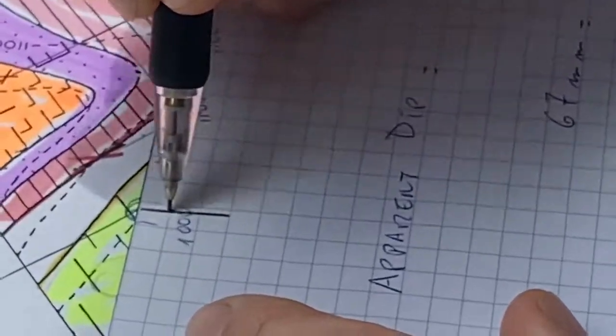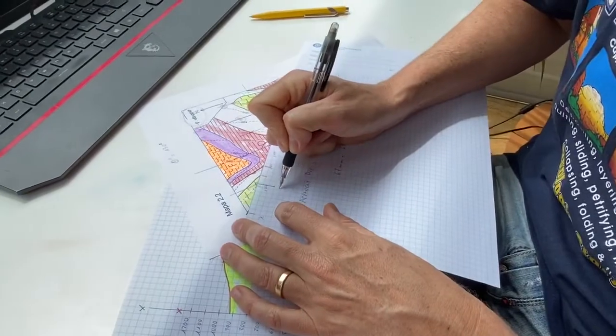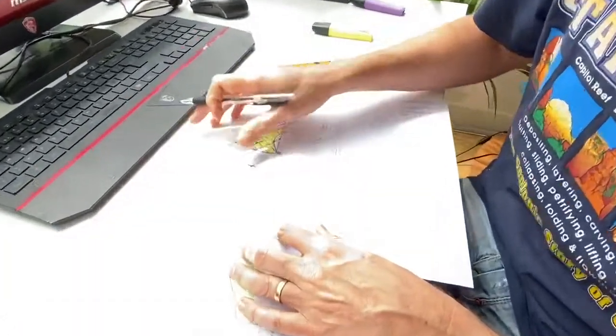Okay, and here I know that I'm at 800 in the boundary between layers A and B.